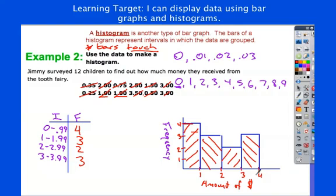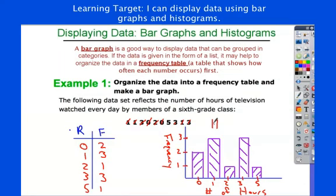Now, I forgot one thing on the bar graph and on the histogram. We need a title. So, on this, we could call this amounts of money given by the tooth fairy. On the bar graph, maybe we'll call this hours of TV watched by sixth graders. Make sure you have a title. Obviously, that's something that's often forgotten.